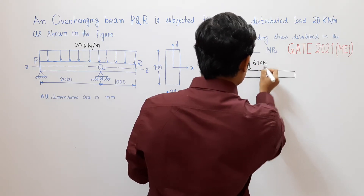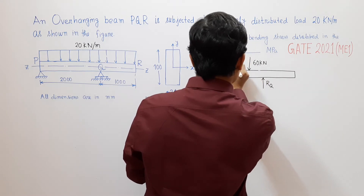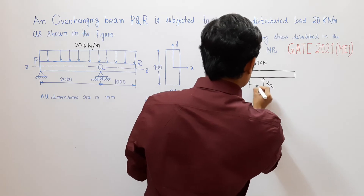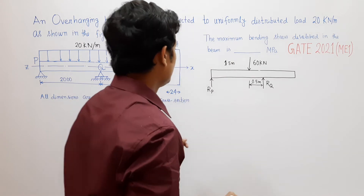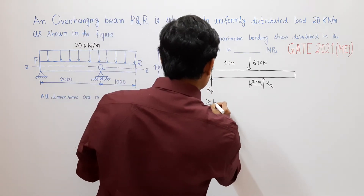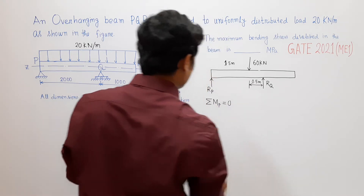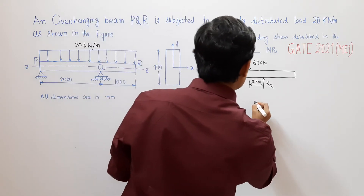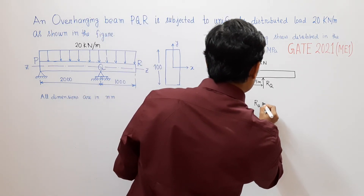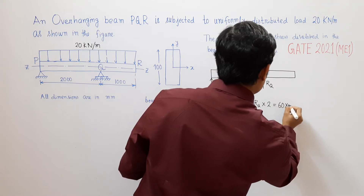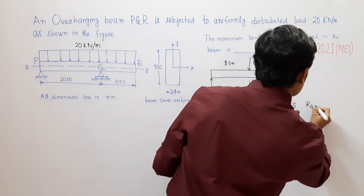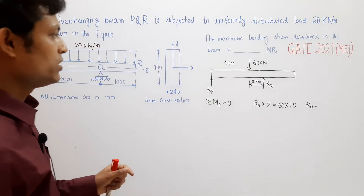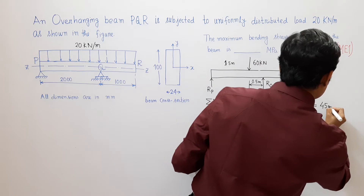The midpoint is at 1.5 meter, and point Q is at 2 meter from P, leaving 0.5 meter overhang. Taking moment about point P equal to zero, we get RQ into 2 equals 60 into 1.5.